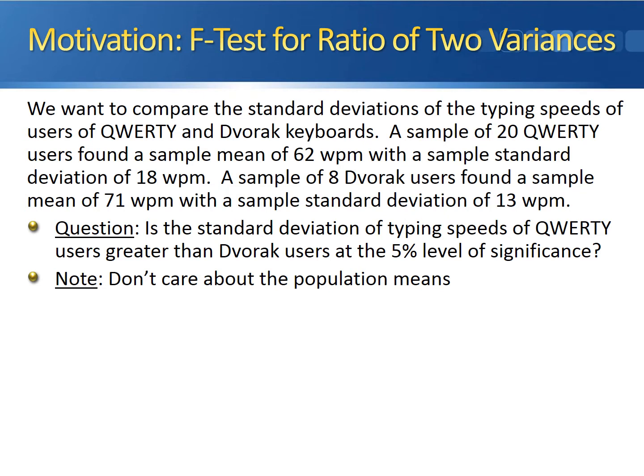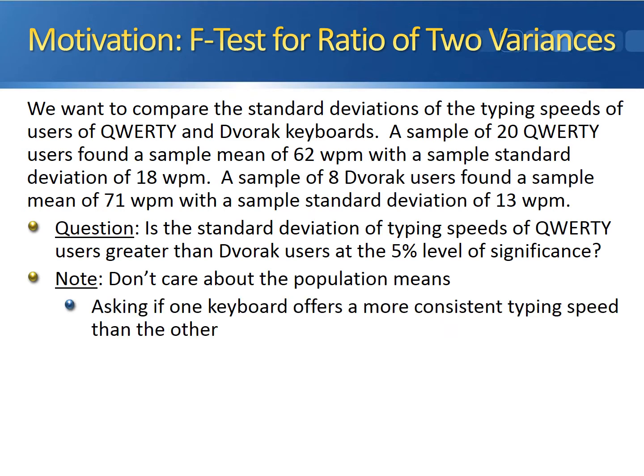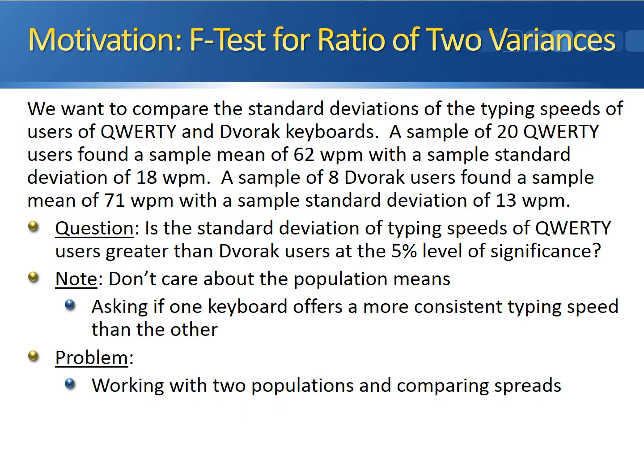Note that we don't care about the population means. This is very similar to the chi-squared test for a population variance, where we weren't concerned about the mean. We're only asking if one keyboard offers a more consistent typing speed than the other. The problem is that we're working with two populations, and this time we're comparing the spreads of these populations — how far apart the observations are.